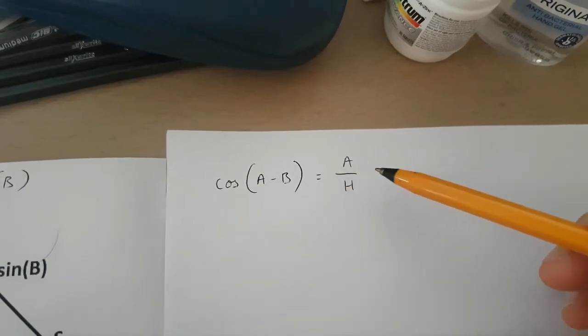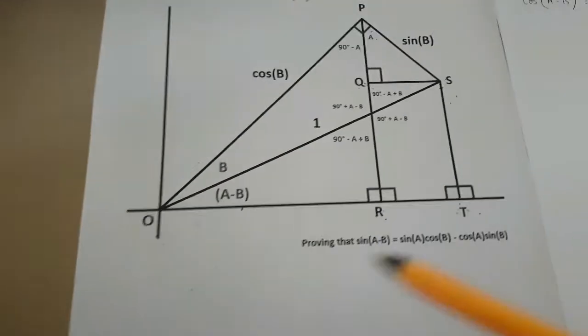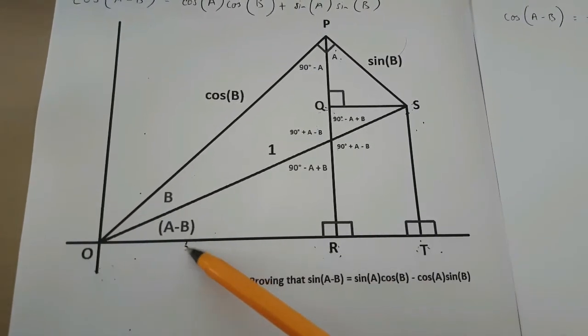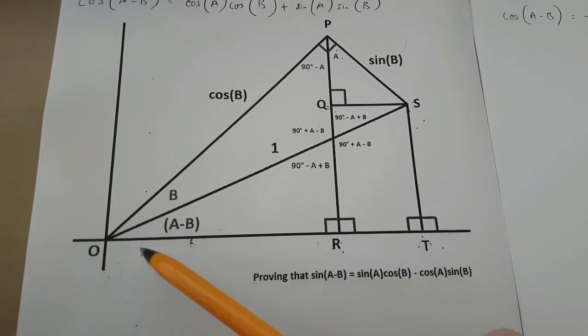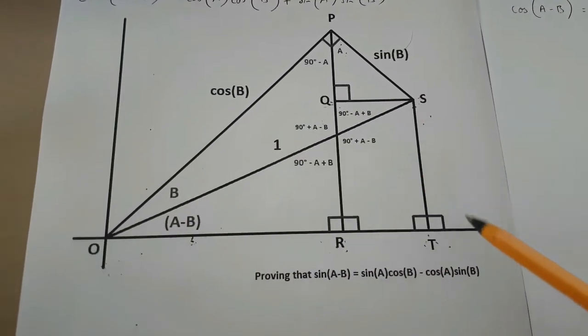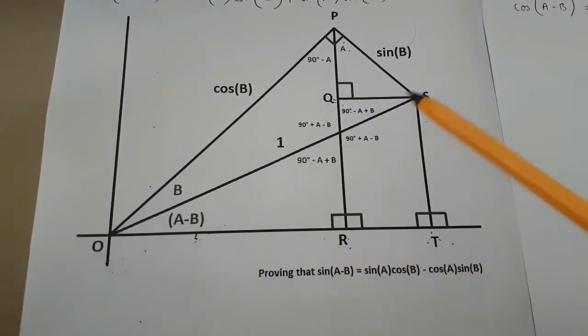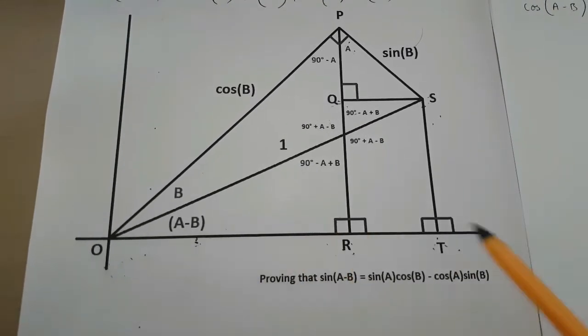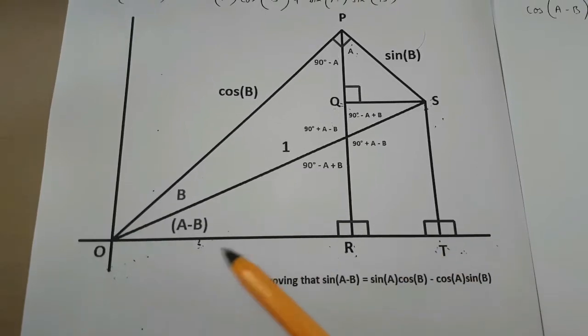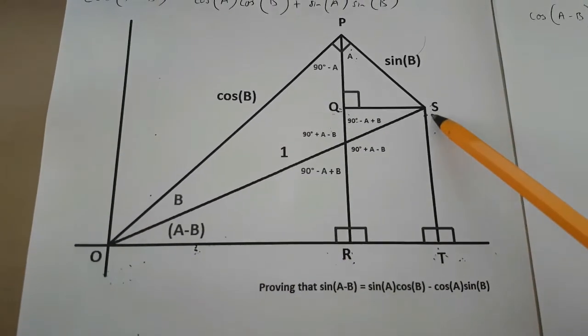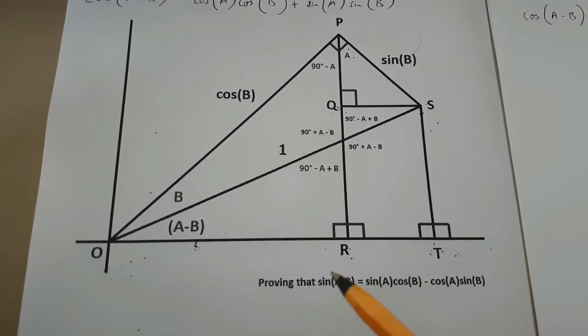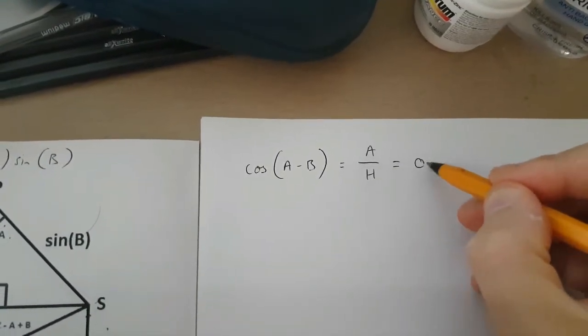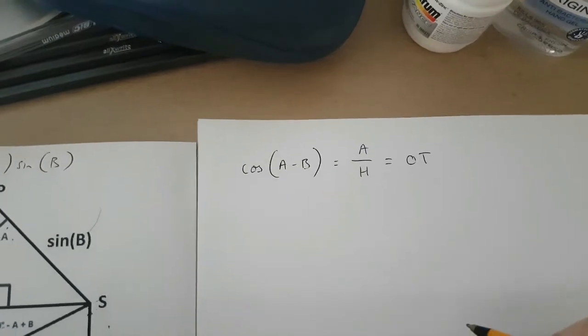and this is adjacent over hypotenuse. The angle A minus B is over here, and what we've got is this triangle OST, a right-angled triangle. Its adjacent side is OT, and its hypotenuse is 1. This means that cos(A-B) is going to be equal to OT.